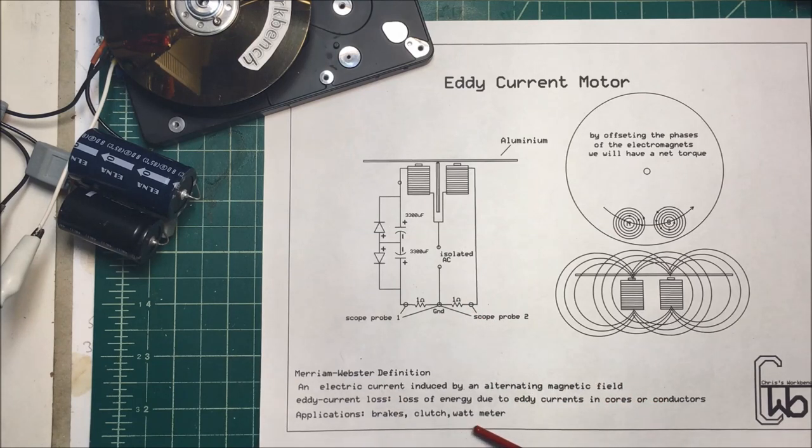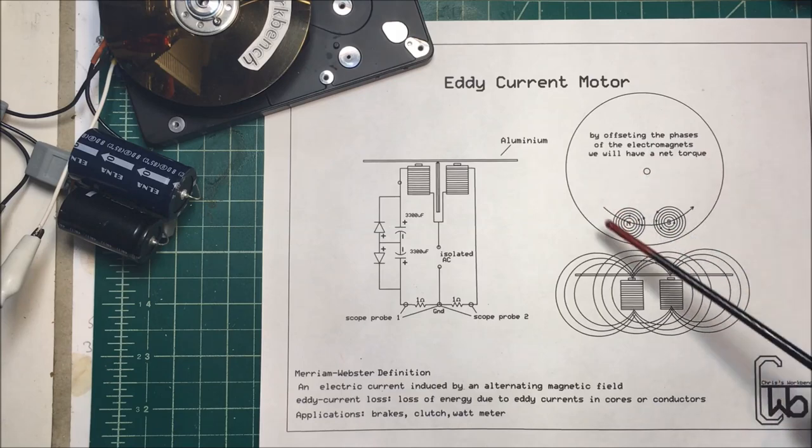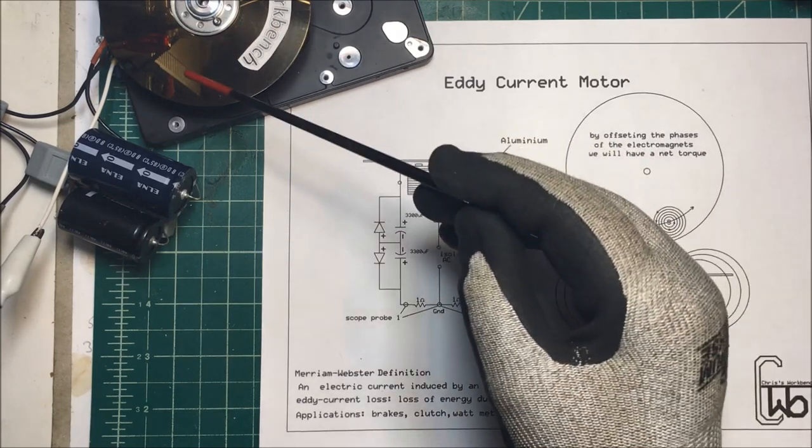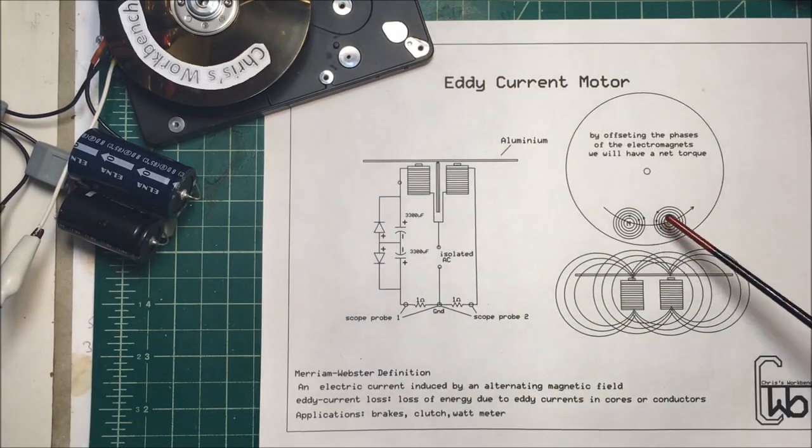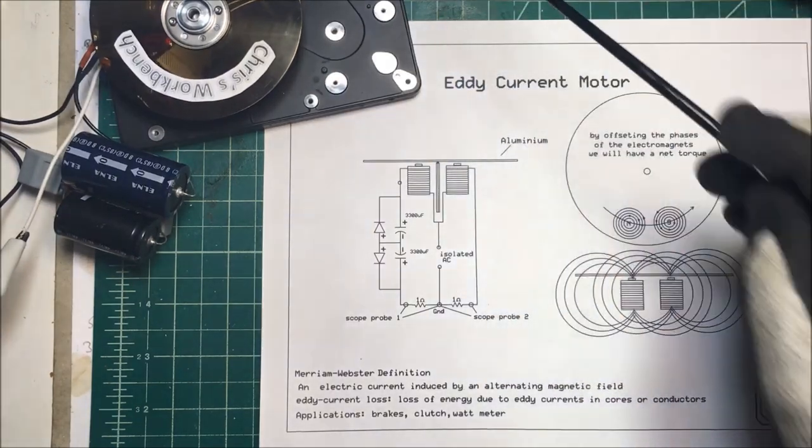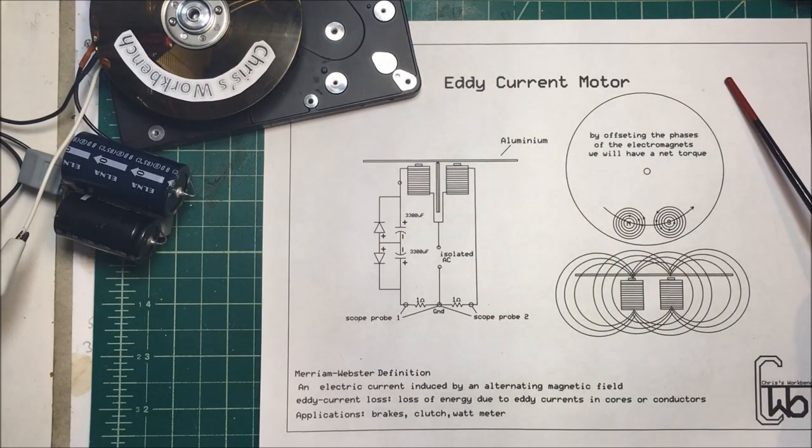They use these things for clutches, brakes, and the old style watt meters would use this same system. They would run the current through these coils. That's an eddy current motor, thank you.